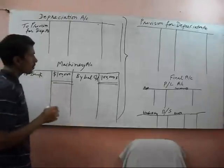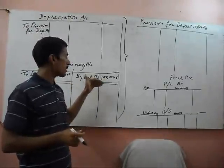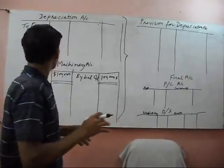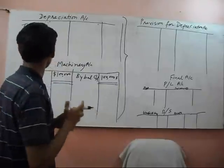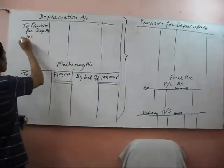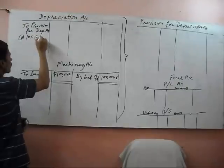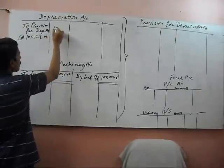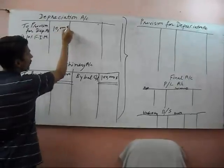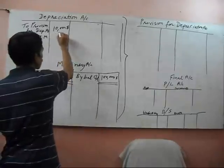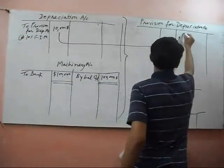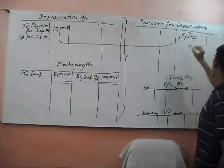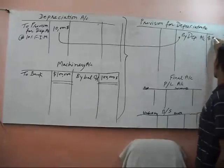Suppose we are charging 10% depreciation with the straight line method, or fixed installment method. 10% with fixed installment method means 10,000 dollar, and this will go to the credit side of provision for depreciation account by depreciation account with 10,000 dollar.